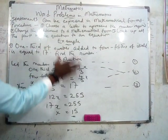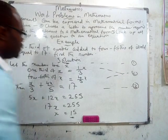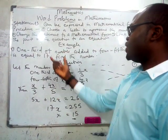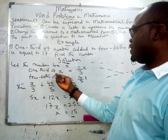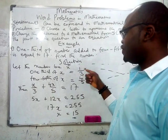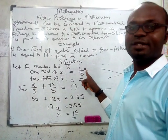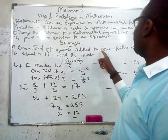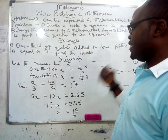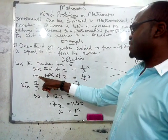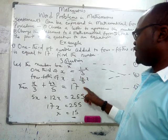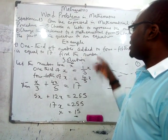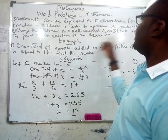We change all the statements to mathematical form. One third of the number: that is 1/3 of x, written as x over 3. It is added to four fifths of the number — that is 4/5 of x, written as 4x over 5. Now that we've converted those, we will link up the parts and form an equation to solve.